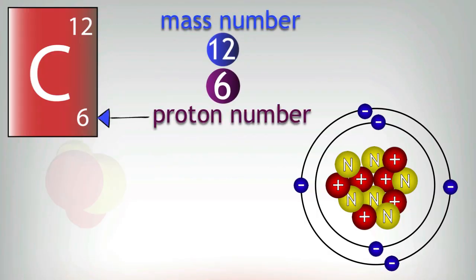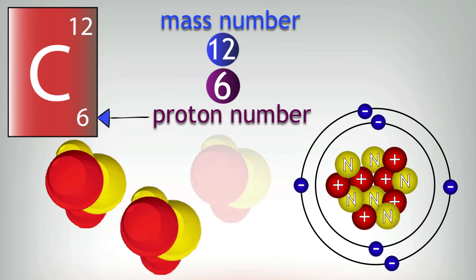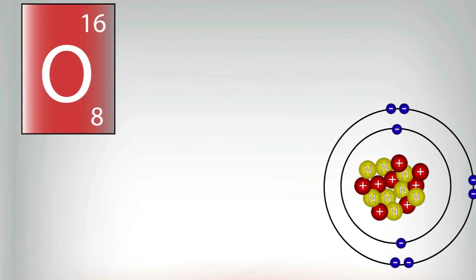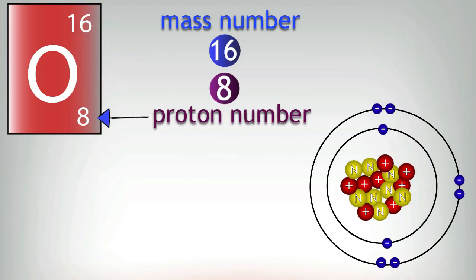So it could be made up of three of these blocks of two neutrons and two protons. Then finally, let's look at oxygen. Oxygen has got a mass number of 16 and a proton number of eight, and it can be made up of four of these building blocks.